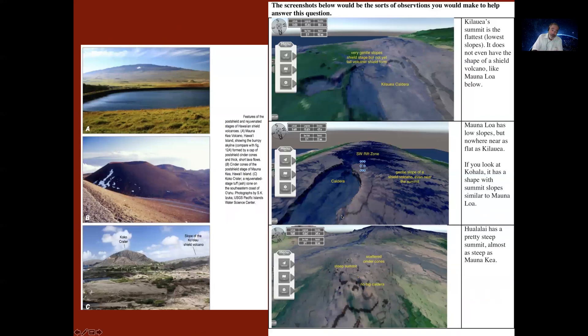The view on the left shows you different volcanic features of different stages of the Hawaiian volcanoes. The Mauna Kea overall shield volcano that you see in the upper left letter A is in a post-shield stage because it has cinder cones scattered on the surface and the lava flows on top are a little bit older.